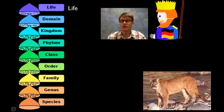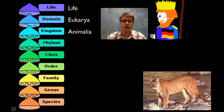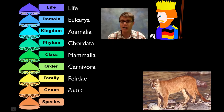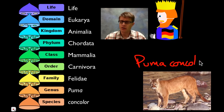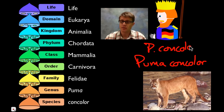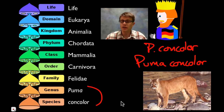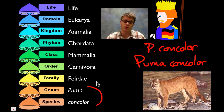Let's go through the mountain lion as an example. It's a living thing, in the domain Eukarya — meaning it has a nucleus. It's an animal, a chordate with a spinal cord, a mammal, a carnivore, a cat. And its scientific name is Puma concolor. All scientists will write this out as Puma concolor, and in the literature it's abbreviated and written in italics. All living things we've identified as species are classified according to this system.